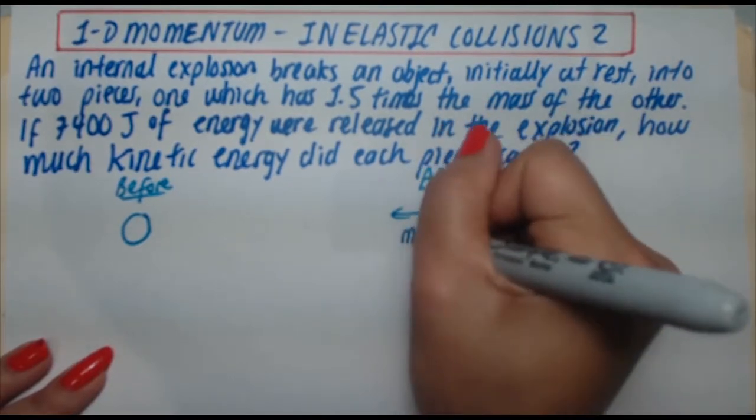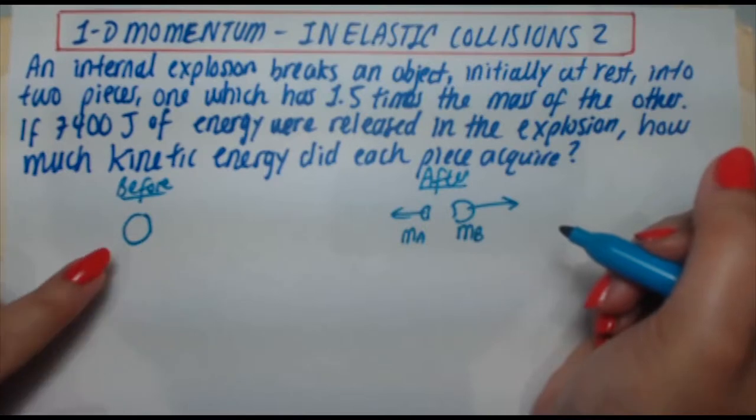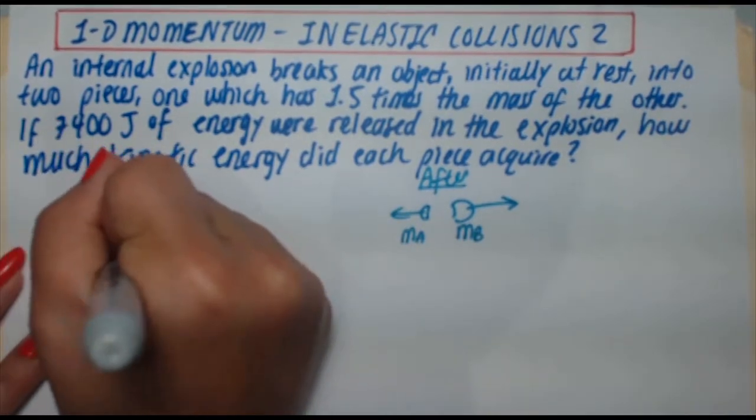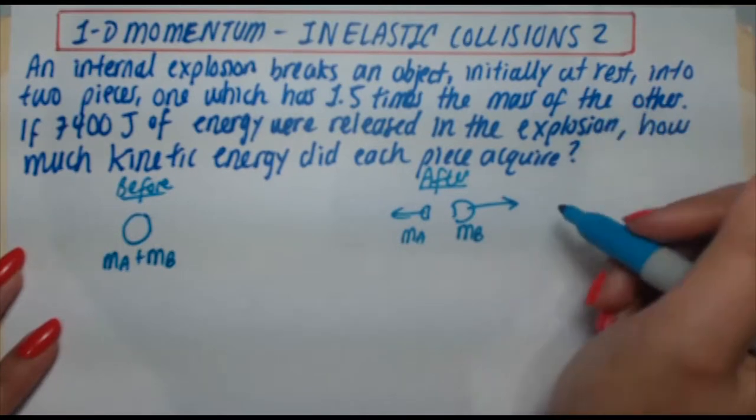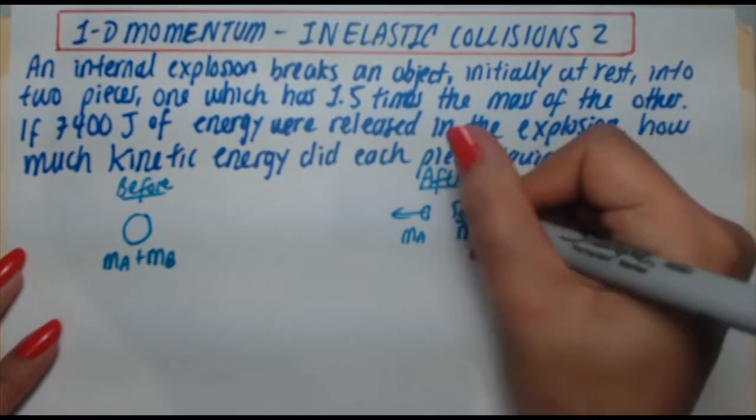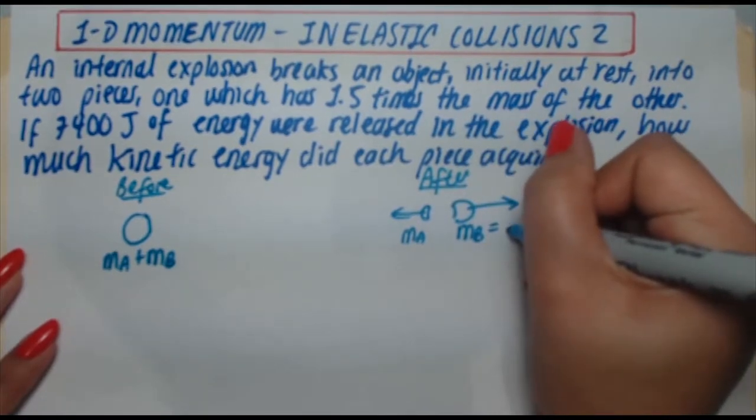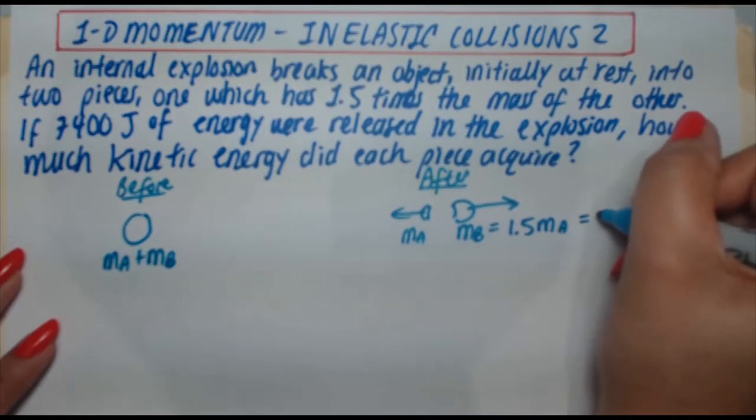So let's call one of these pieces mA, the other piece mB. Therefore, in the before scenario, we have mA plus mB together. Now we're also told that one of the masses is 1.5 times the mass of the other. So therefore, because I've drawn mB as the larger piece, mB is 1.5 times mA, or if you'd like to write it as a fraction, 3 halves mA.